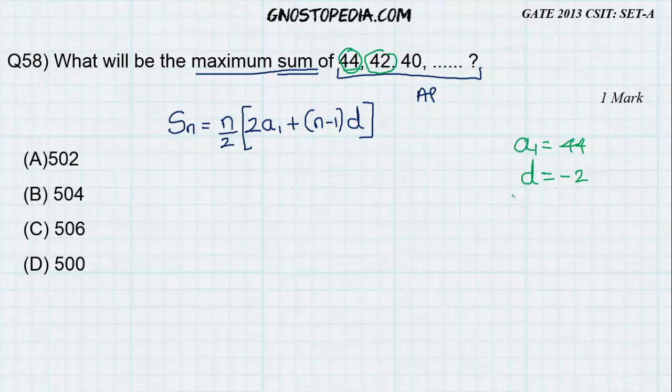And the value of N is nothing but 22. Now how do I get 22? Let us find out. Now the maximum value will be reached only if the sequence is of this form: 44 plus 42 plus 40 up to 2.